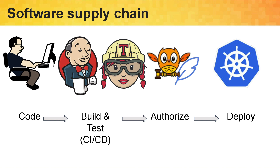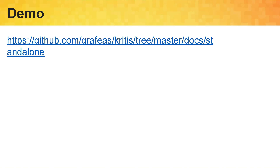If you're not familiar with the term software supply chain, it's basically all the steps that take you from committing the code to the codebase, then building it and testing it using continuous integration pipelines, and then deploying it to Kubernetes using a continuous delivery pipeline.